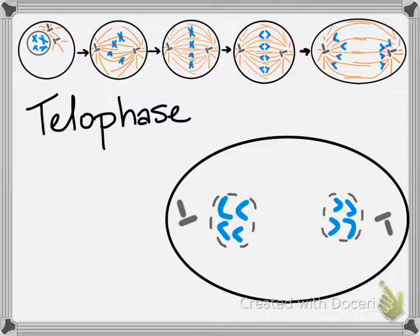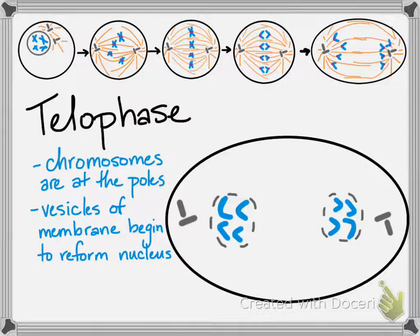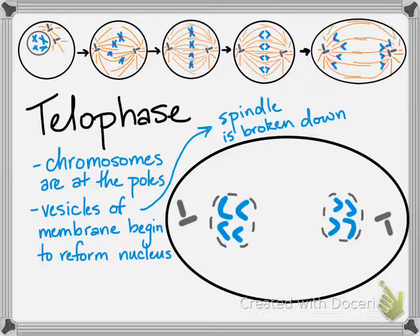You're ready for telophase, where the chromosomes are fully at the poles. Vesicles of membrane start to reform the two nuclei, which requires all of the spindle fibers to get out of the way. The mitotic spindle is almost completely broken down at this point.